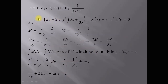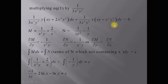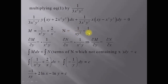Multiplying the integrating factor 1/(3x³y³) to the given differential equation, we obtain: [1/(3x³y³)]·y(xy + 2x²y²)dx + [1/(3x³y³)]·x(xy - x²y²)dy = 0. After simplification, the new M function is 1/(x²y) + 2/(3x) and the new N function is 1/(xy²) - 1/(3y).